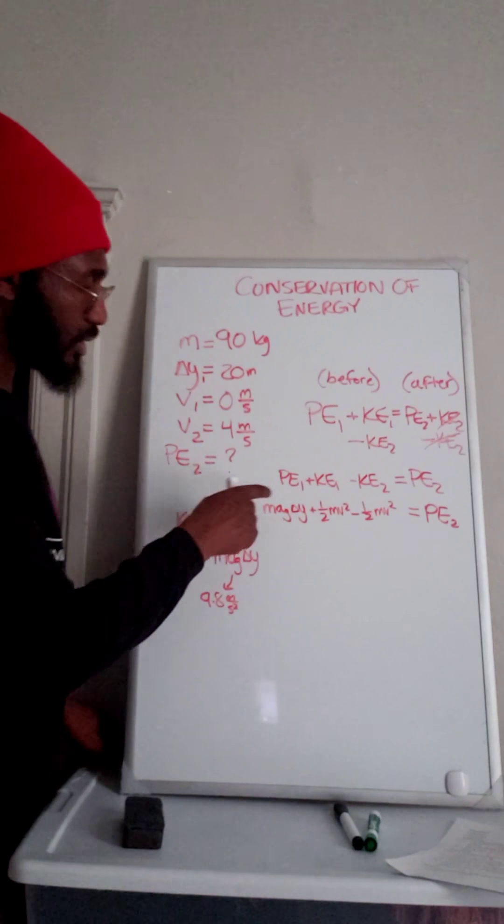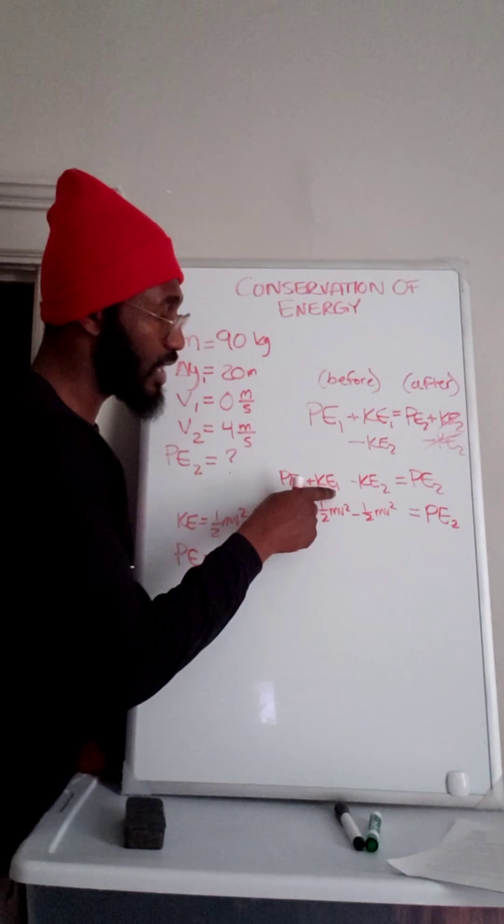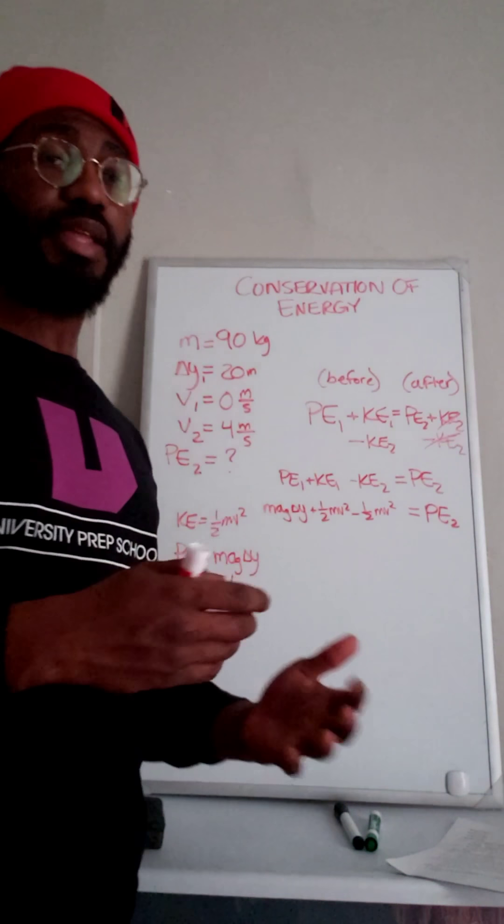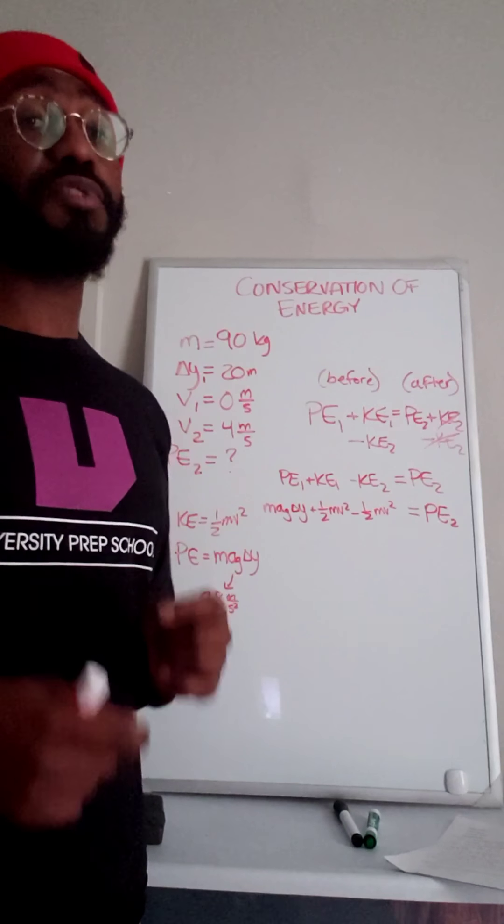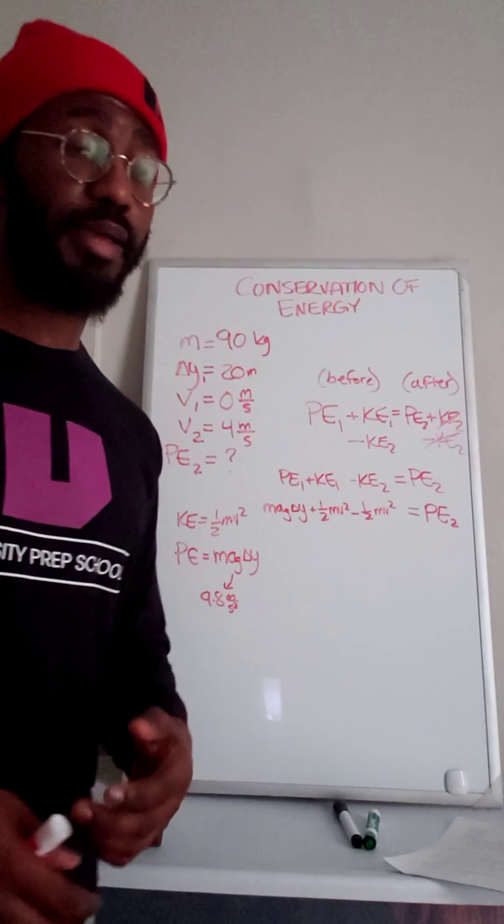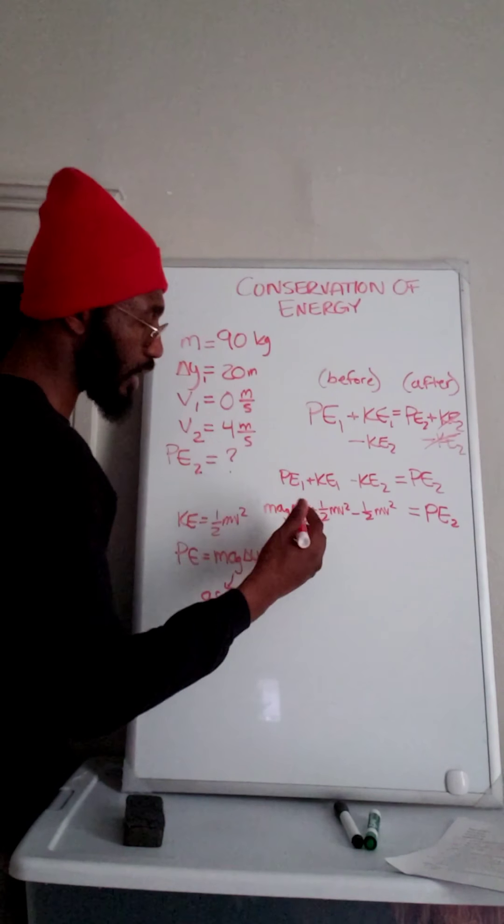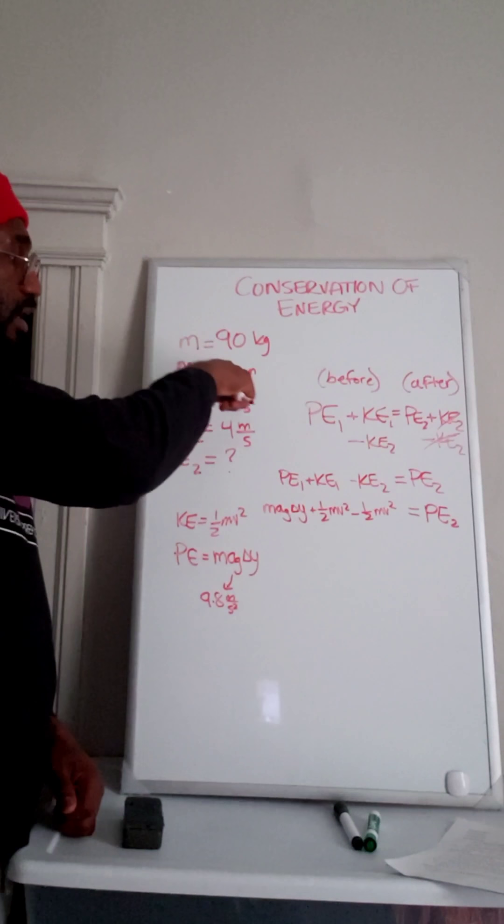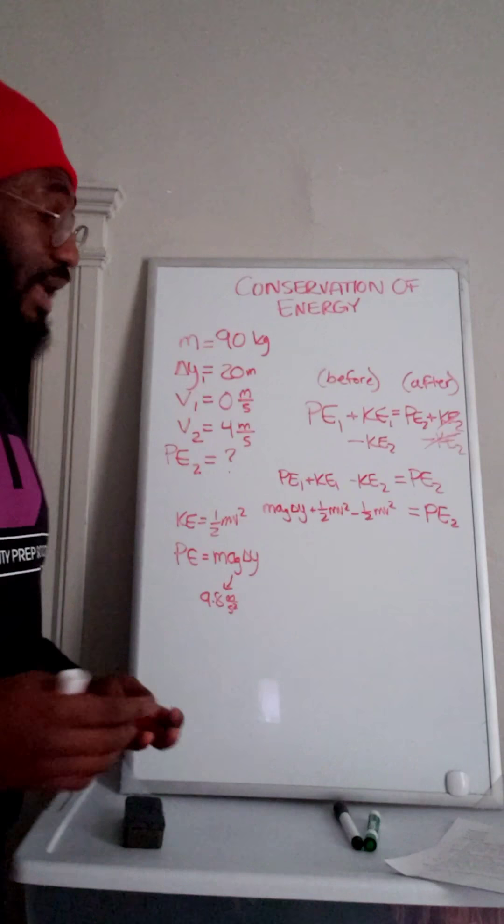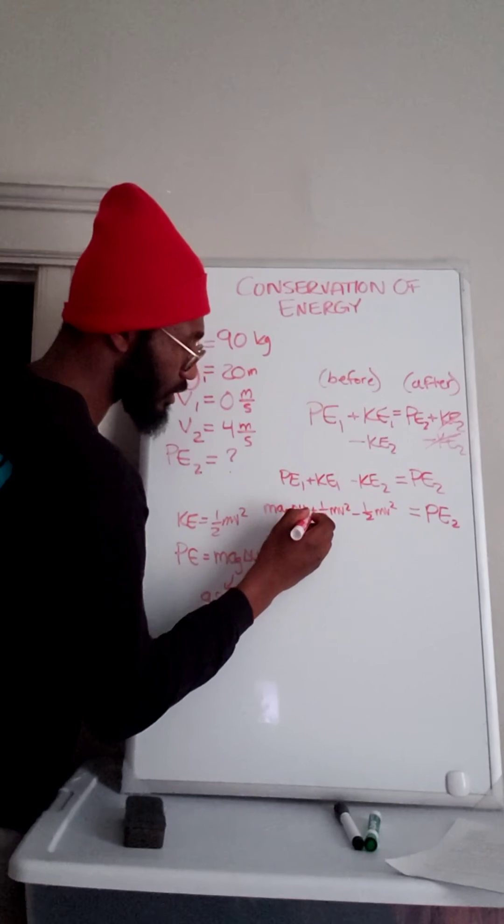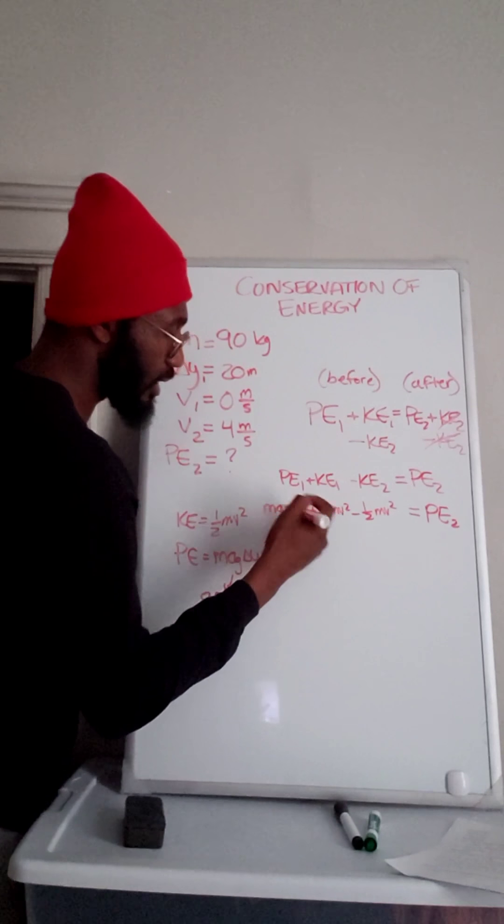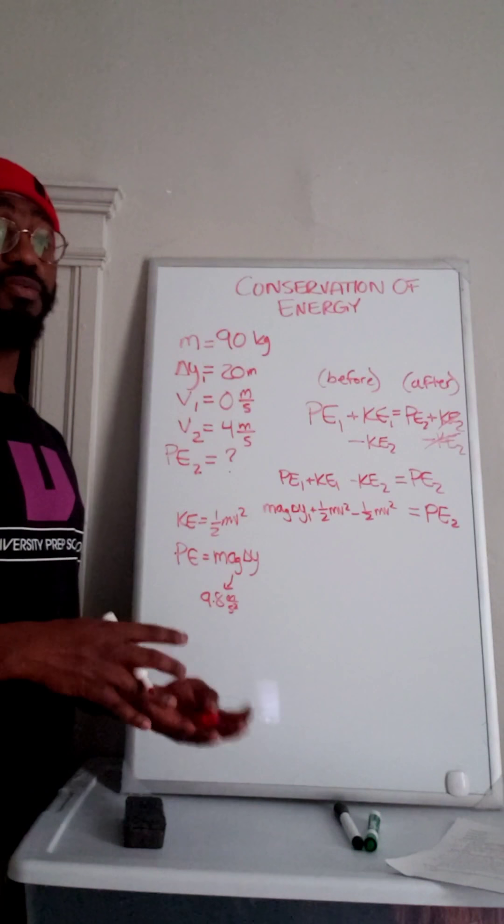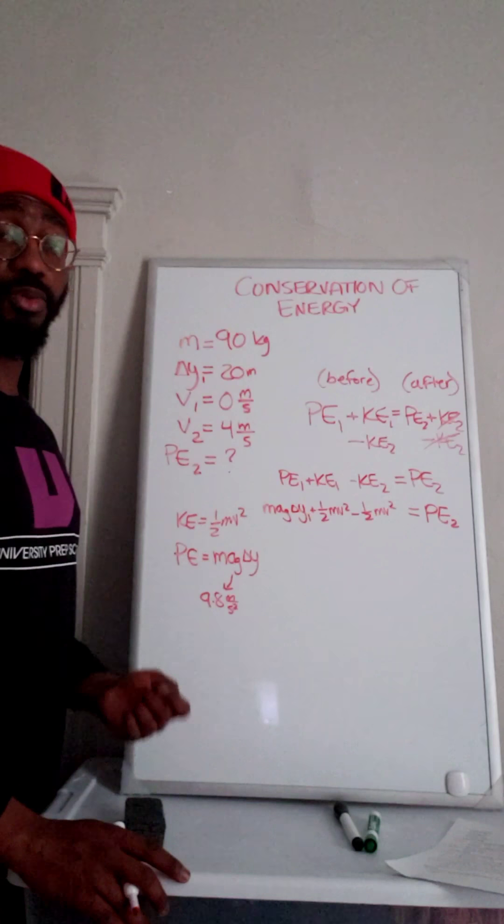The second thing is, notice that this is PE1, this is KE1, and this is KE2. What that means is every variable that changes before and after, we have to label with either a 1 or a 2. So because this is PE1, we know that delta y is going to change. Before, delta y is at 20 meters. After, we don't know where it's at, but we know it changes because she's falling. So this has to be labeled delta y1 according to PE1. Now remember, our mass doesn't change because it's the same person before and after. So we don't have to mark m with a 1 or a 2.